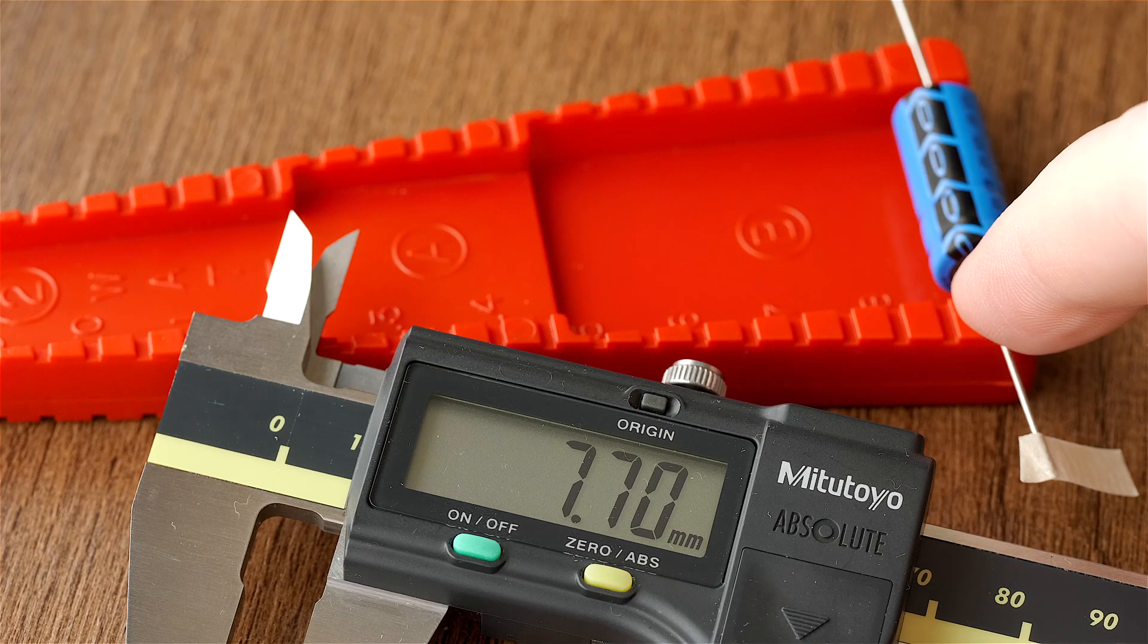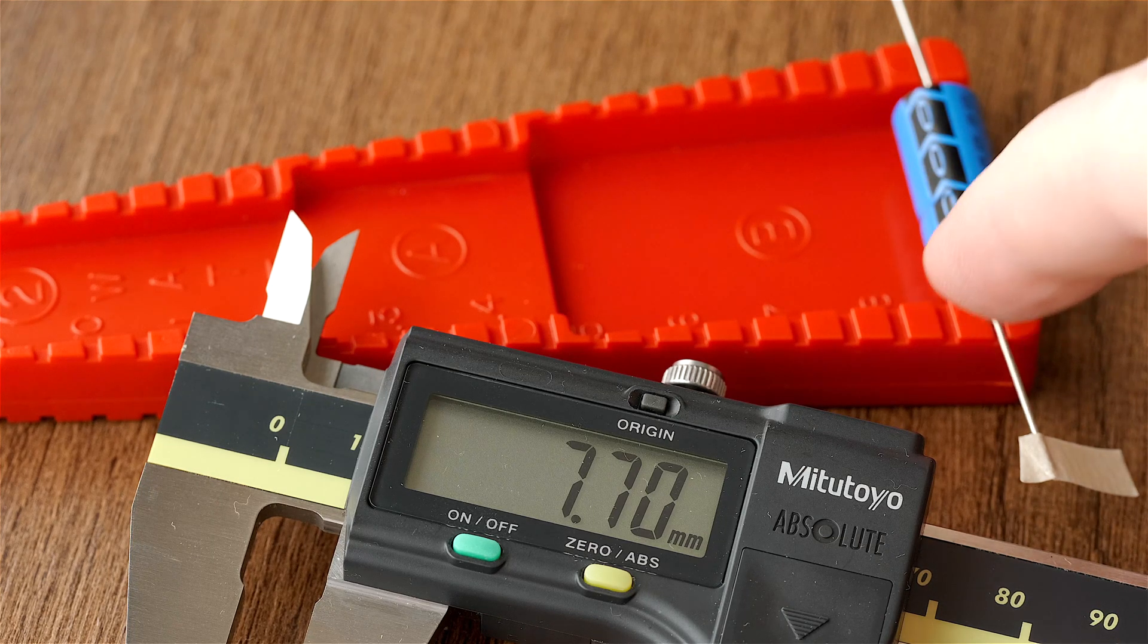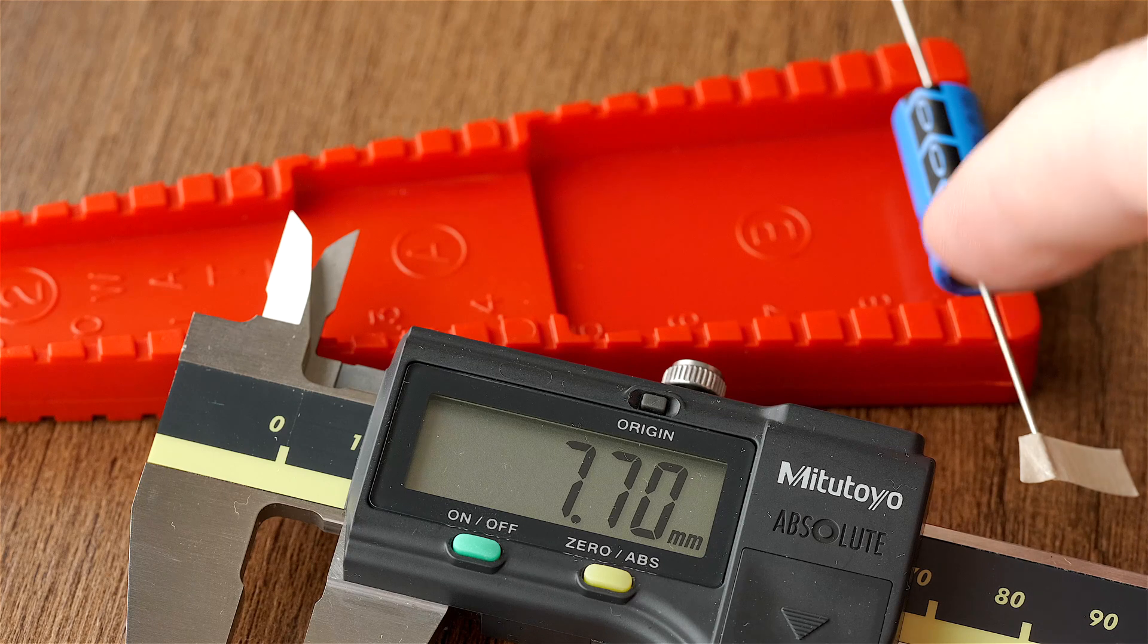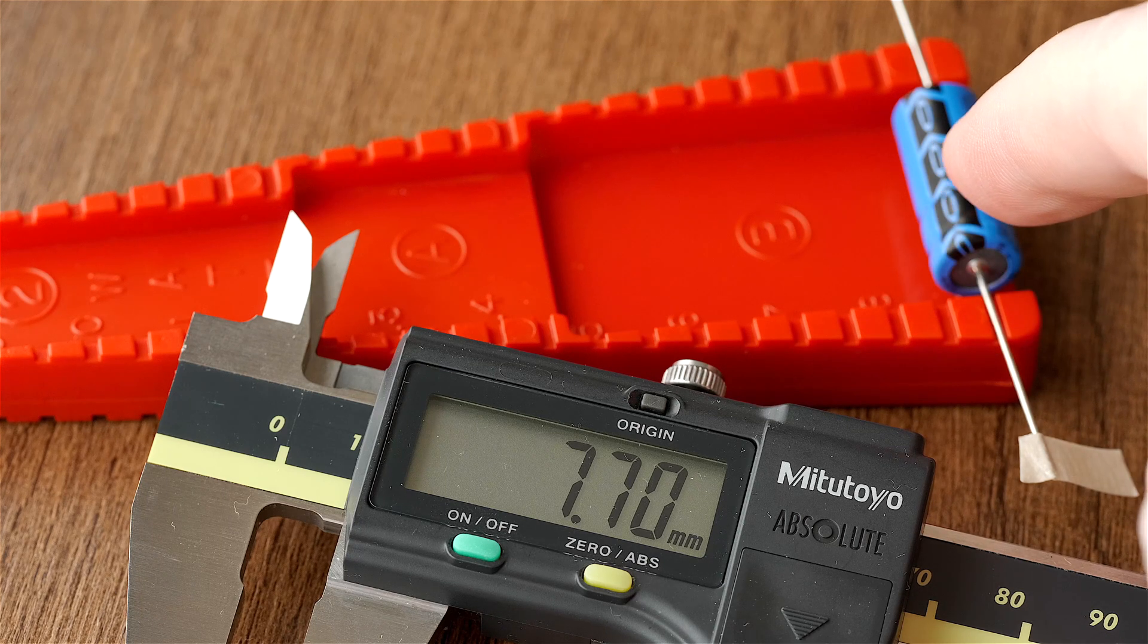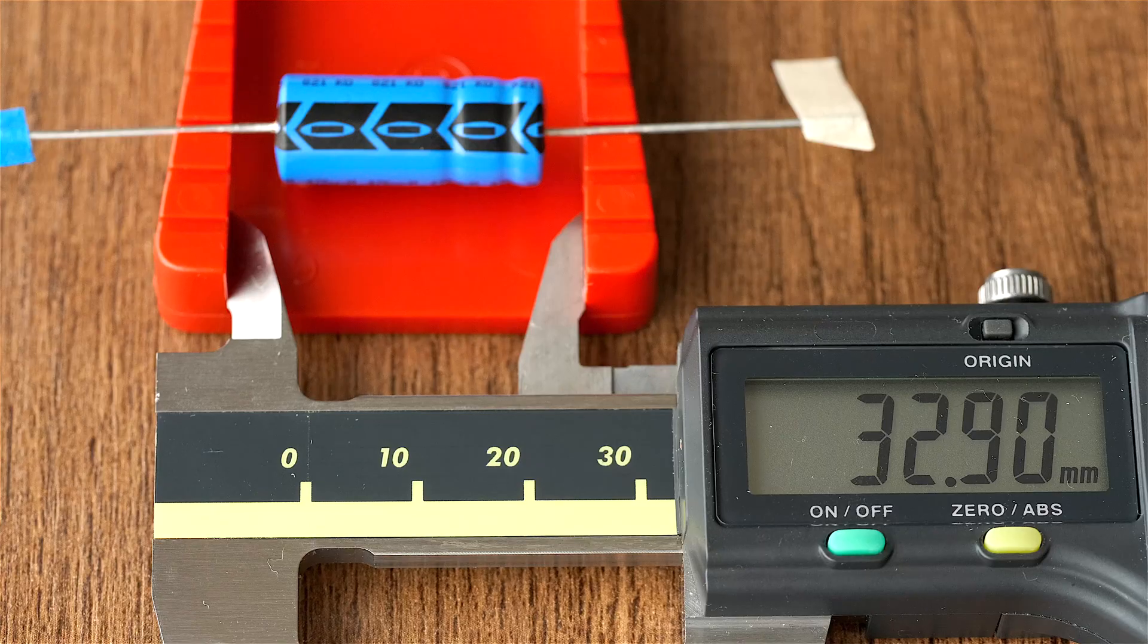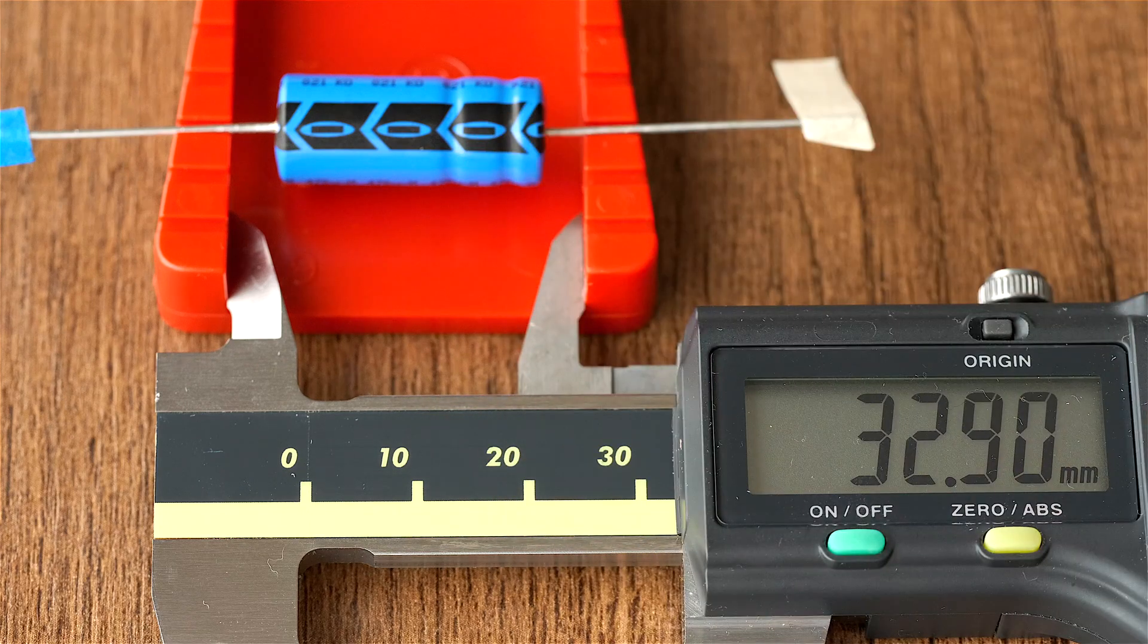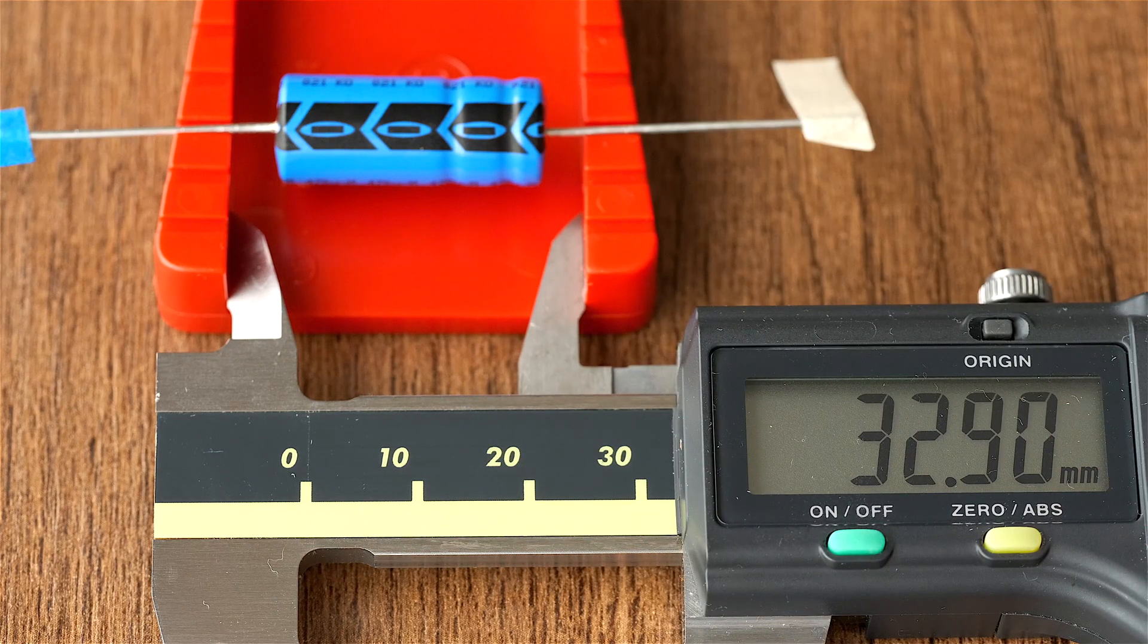But of course, that's with the leads on the very top here. If you want the leads to go down into the gaps, you should restrict the body diameter to about 14 millimeters. And the maximum length of the body that will fit is measured to be 32.9 millimeters.